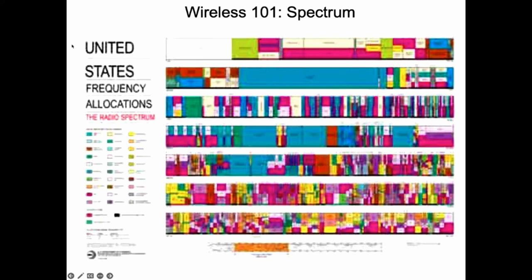The radio frequency spectrum assignments, which are done by a working group within the United Nations, are all filled — but they're not always used all at the same time, which leads to the idea of cognitive radio, where you would listen to see if nothing's happening and, if you're allowed to transmit in that band and nothing's happening, you could do so.